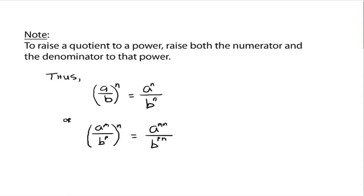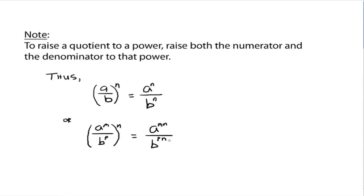More generally, think of it this way: a to the m and b to the p as your fraction — your quotient — raised to the nth power. You get a to the m times n, and b to the p times n. The key is that the exponent outside affects both the numerator and the denominator. Let's look at some examples.